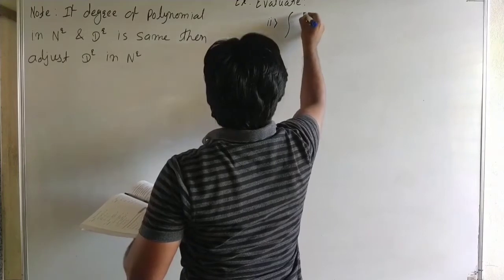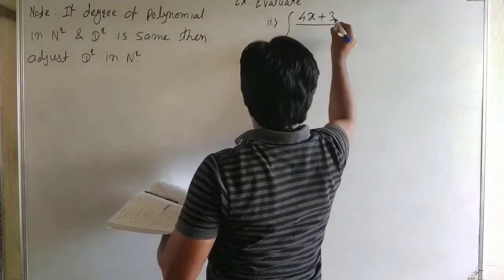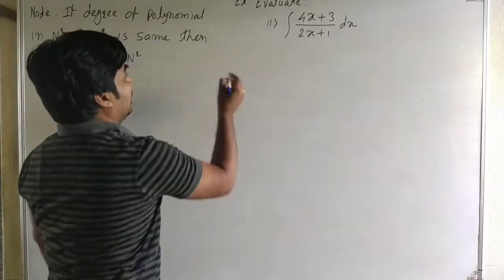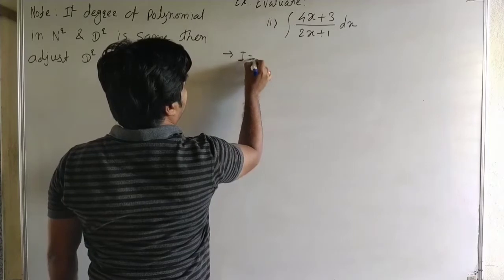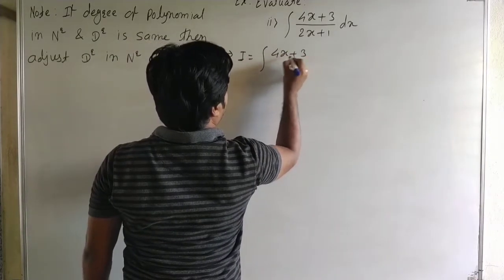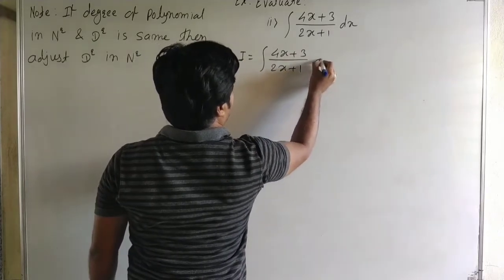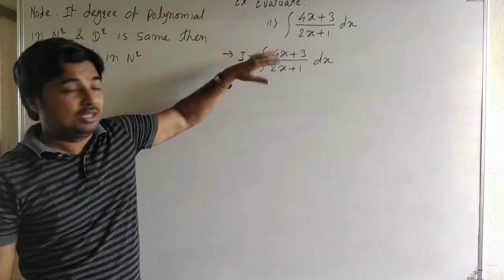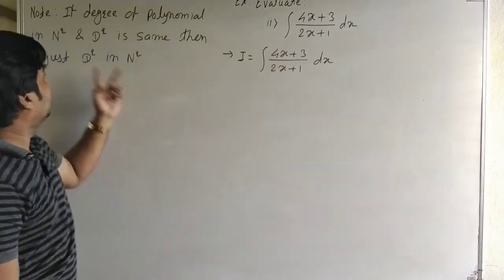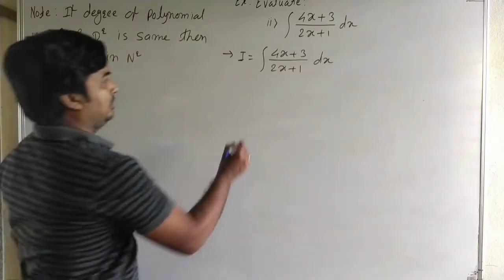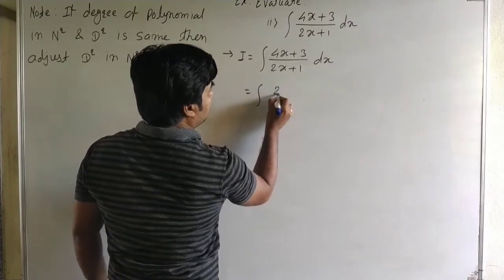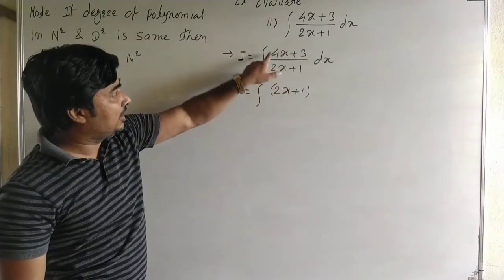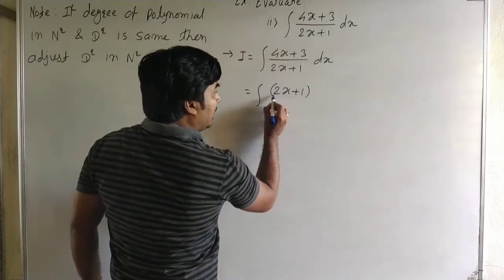Second example: integral of 4x plus 3 upon 2x plus 1 dx. Let I equal integral of 4x plus 3 upon 2x plus 1 dx. Here again it is a division of two terms, and degree of numerator and degree of denominator is same. So we adjust the denominator in the numerator. The denominator is 2x plus 1, but we have 4x in the numerator, so we multiply 2x by 2.